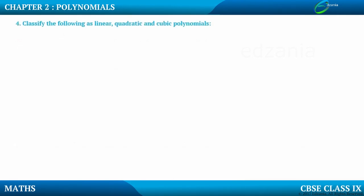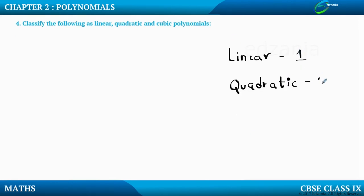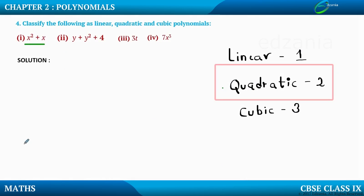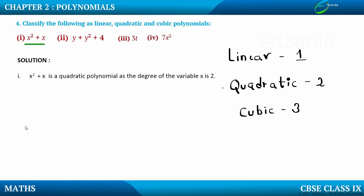Now we are supposed to classify the following as linear, quadratic, and cubic polynomials. Linear means degree 1, quadratic means degree 2, and cubic means degree 3. In the first example, the highest degree of x is 2, so x squared plus x is a quadratic polynomial.